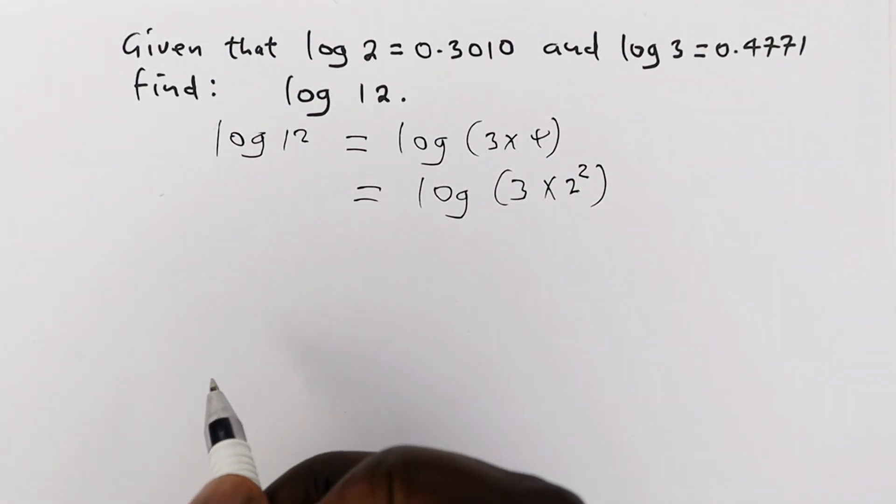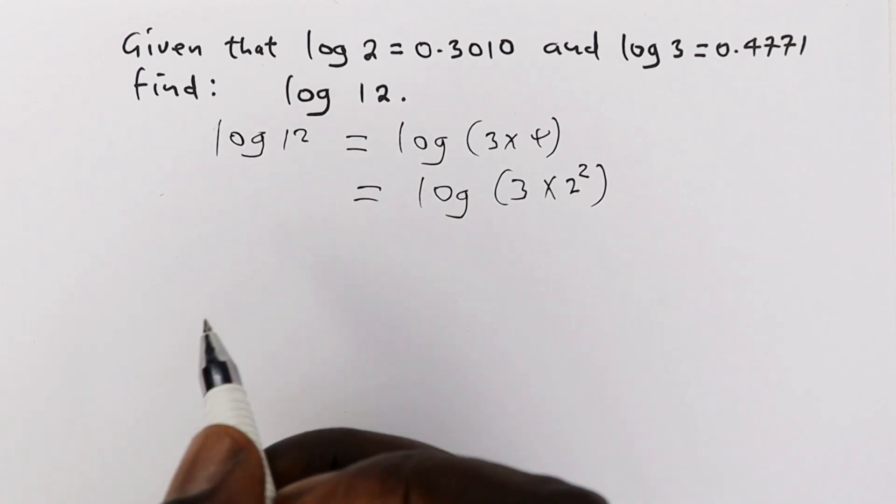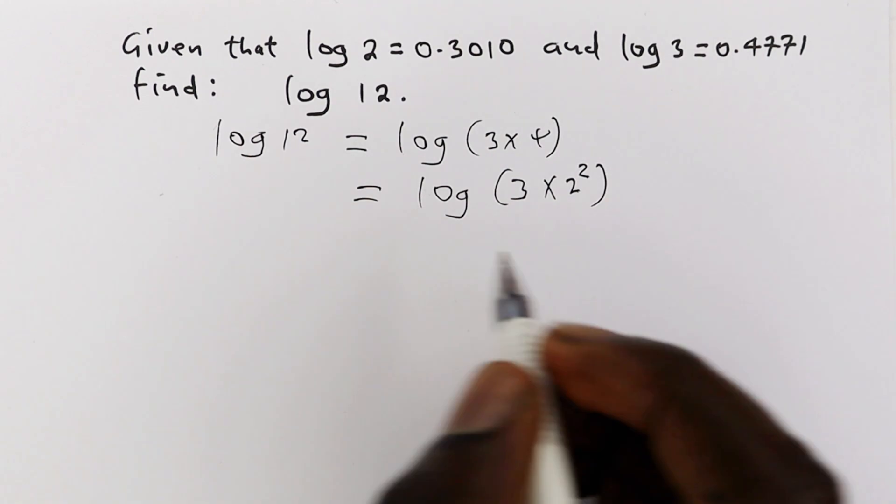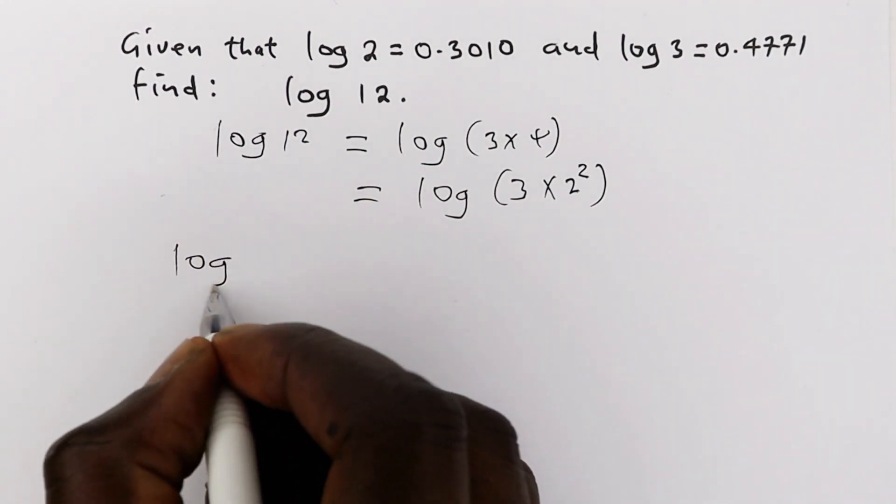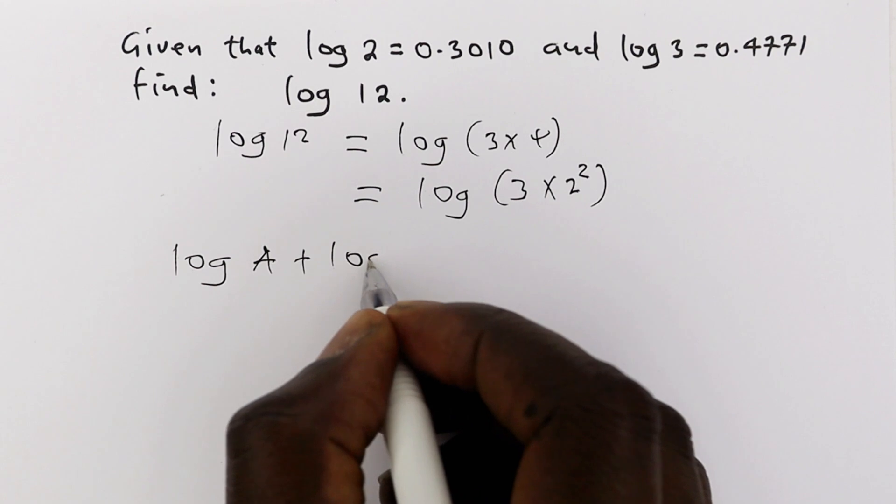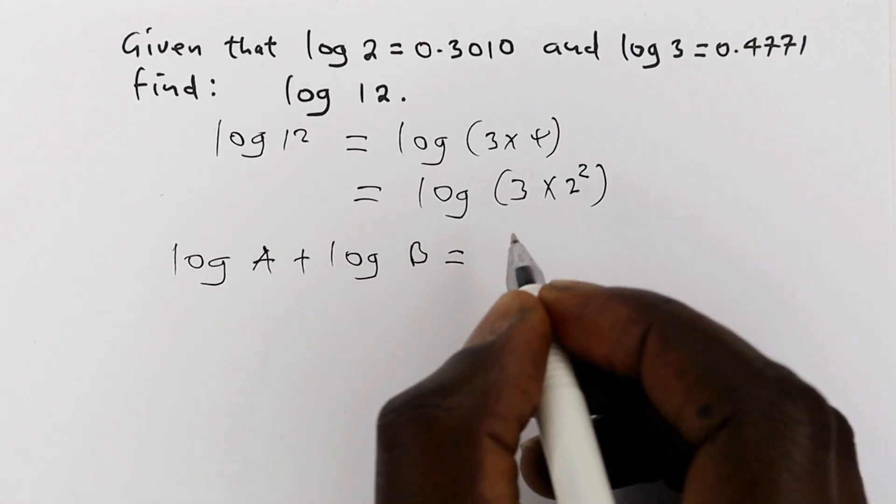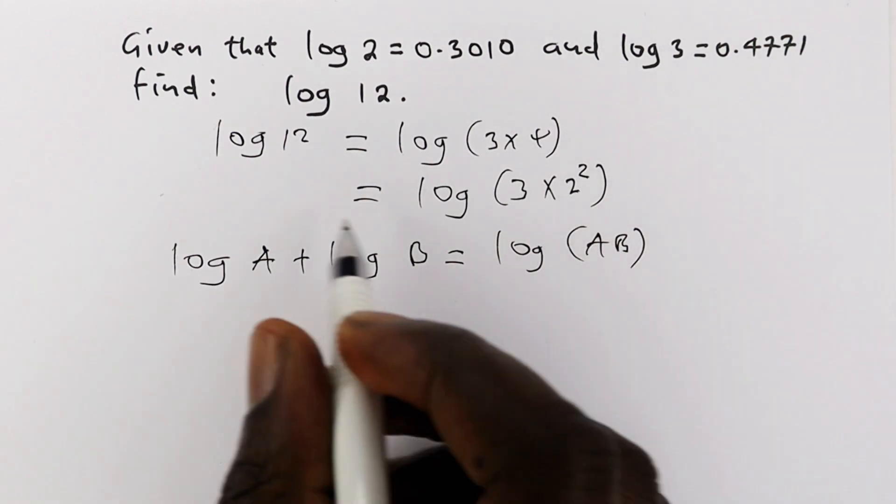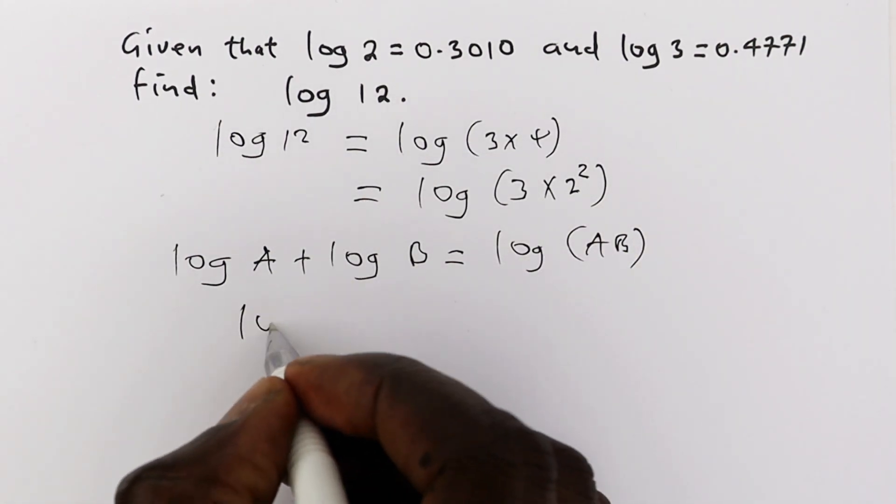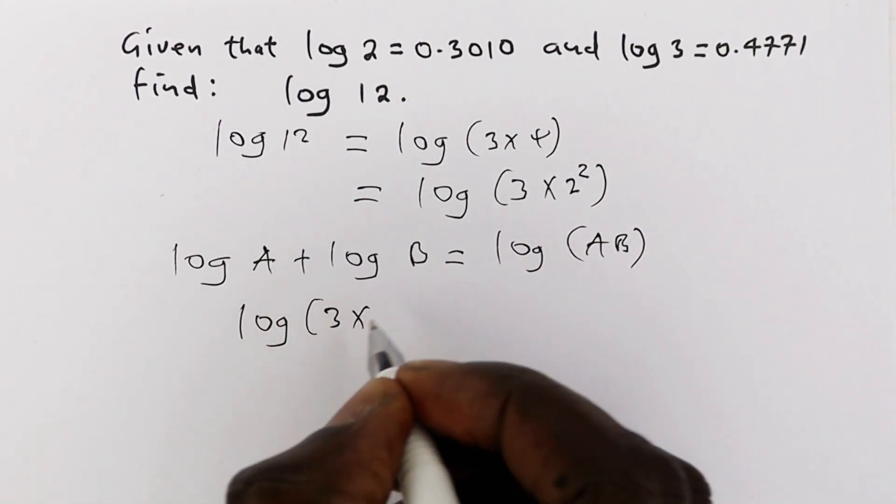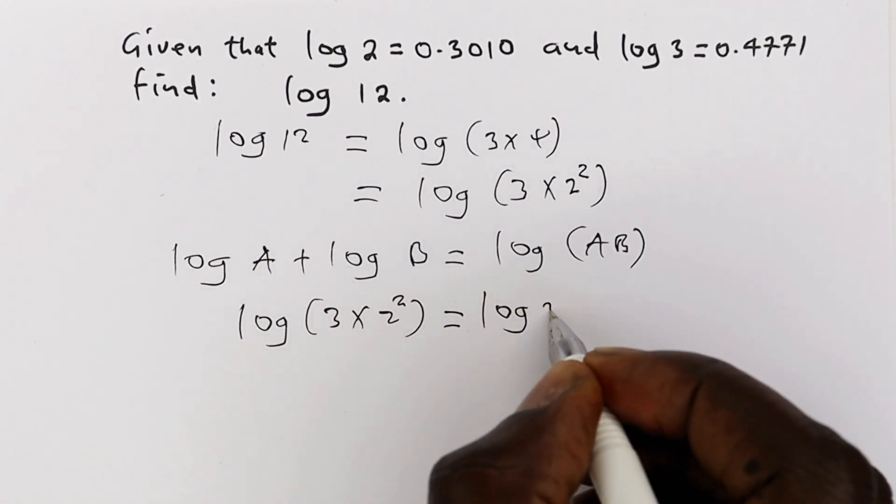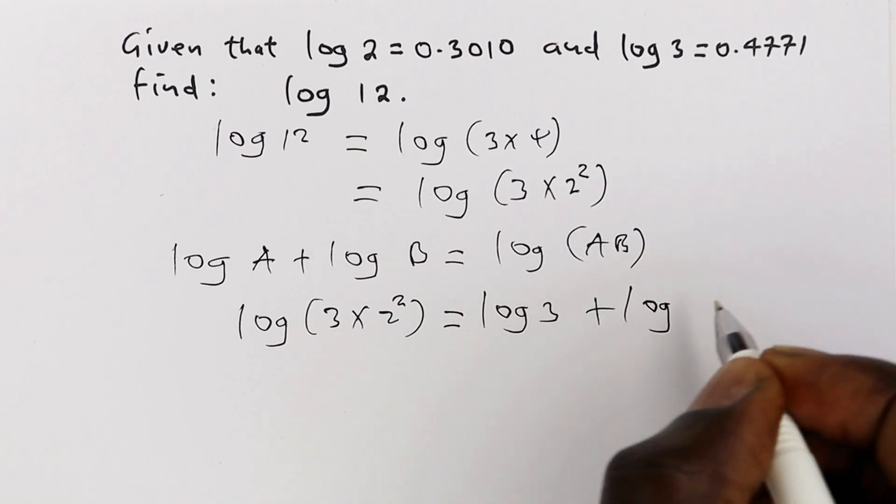From there, we just apply the laws of logarithms. This is a product of two numbers, it's a log of a product of two numbers. So you use log of a number A plus the log of a number B is the same as the log of the product of the two numbers. So it means what we have here, that is log of 3 times 2 squared, can be written as log 3 plus log 2 squared.